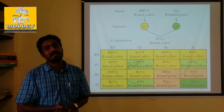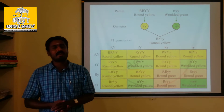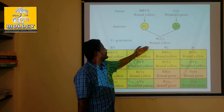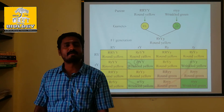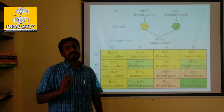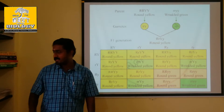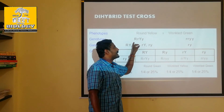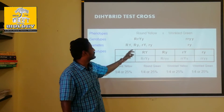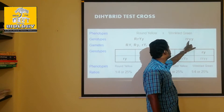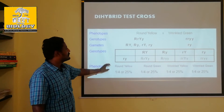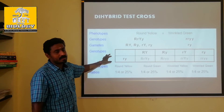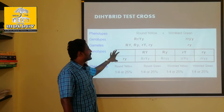That is a test cross. If you choose an individual that is homozygous dominant, crossed with a homozygous recessive parent, all offspring are round yellow — that is homozygous dominant. If the individual is heterozygous dominant, the result will be different. We can use a Punnett square, our checkerboard, to work this out.